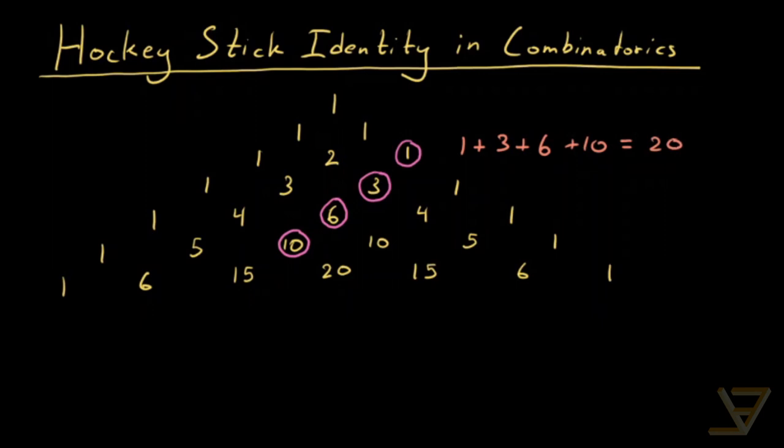And if you look at the Pascal's triangle, the twenty appears right to the bottom right of the ten. And as a result we get a shape like this that appears to be a hockey stick. And that's where the hockey stick identity comes from.